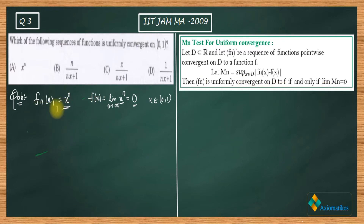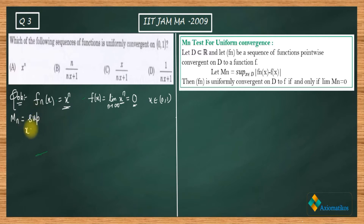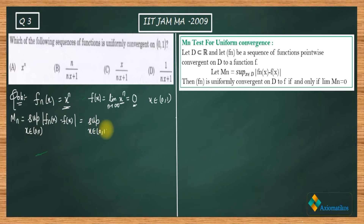We have proved that f_n(x) converges pointwise to 0. Now we have to check whether M_n converges to 0 or not. So M_n is the supremum over x in (0,1) of |f_n(x) − f(x)|. Here f_n(x) = x^n and f(x) = 0, so we need to determine the supremum of |x^n|. Note that n is treated as a constant here.